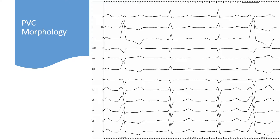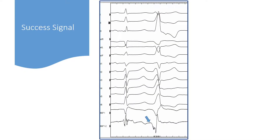A closer look at the PVC morphology shows that the PVC origin should be somewhere in the left coronary cusp. We see a fat R wave in V2 and V3, which suggests an epicardial origin — in this case, left ventricular outflow tract, left coronary cusp. Based on PVC morphology, we used a retrograde approach to start mapping the left ventricular outflow tract, especially the coronary cusp.